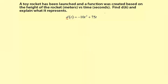So find d of 6. You're going to input a 6 for d, and then see what you get. So d of 6 equals negative 10 times 6 squared plus 75 times 6.